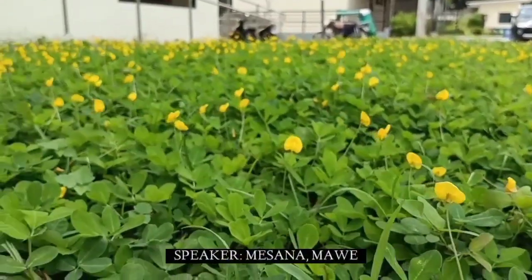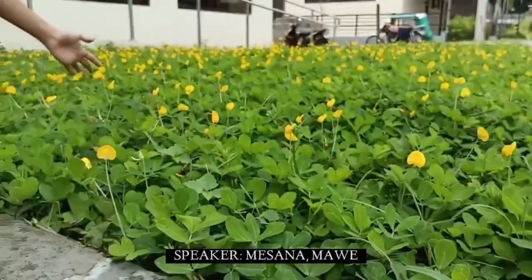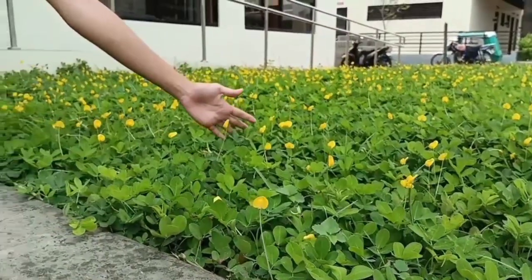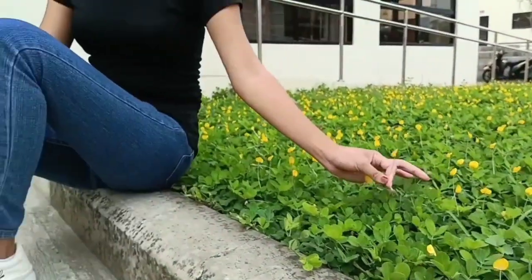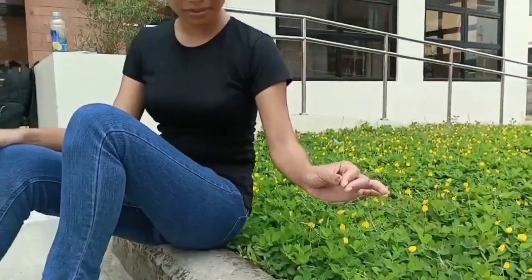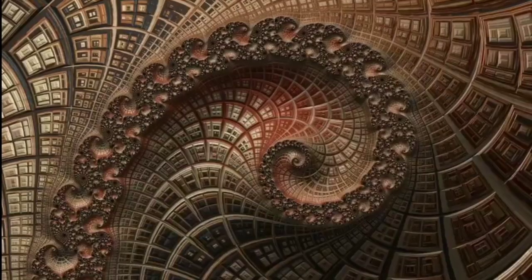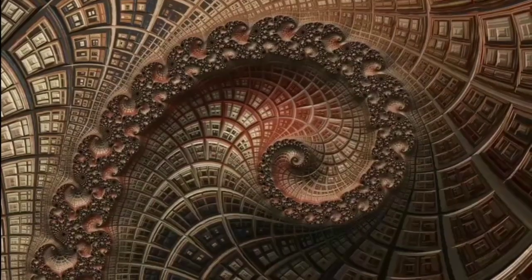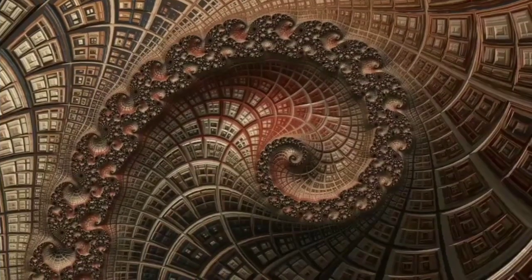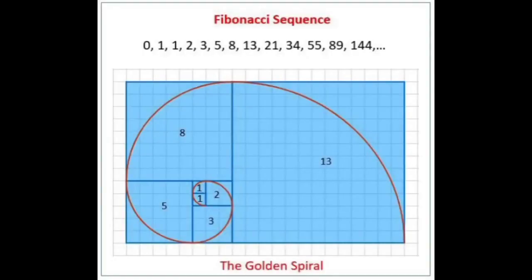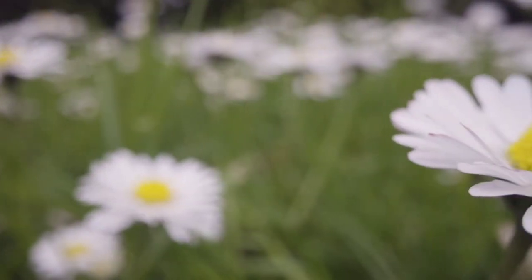Have you ever wondered that our nature is full of beautiful things that you don't even notice? Bright, bold, and beloved — sunflowers possess radial symmetry and a type of numerical symmetry known as the Fibonacci sequence: one, two, three, five, eight, thirteen, and so forth.